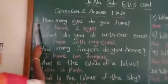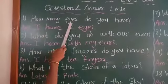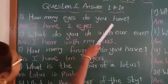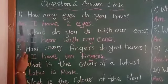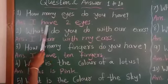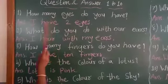Topic is question and answers 1 to 10. Question number 1: How many eyes do you have? Answer: I have 2 eyes.